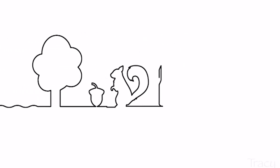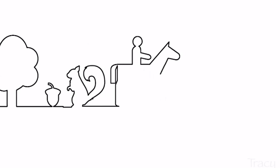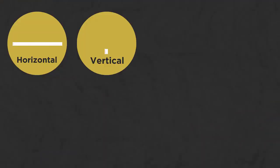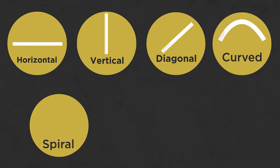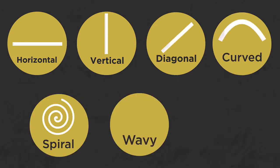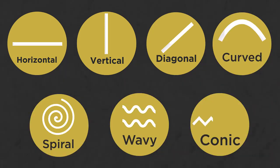There are different types of lines. There could be sleeping or horizontal lines, standing or vertical lines, diagonal, curved, spiral, wavy, conic lines, etc.